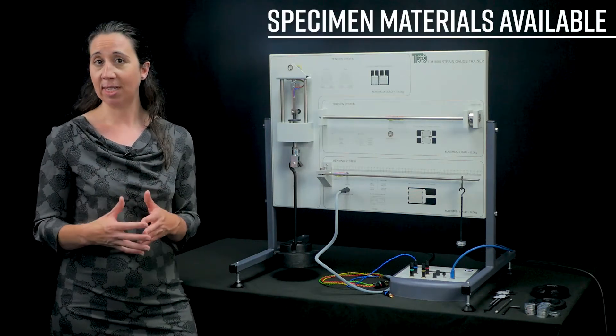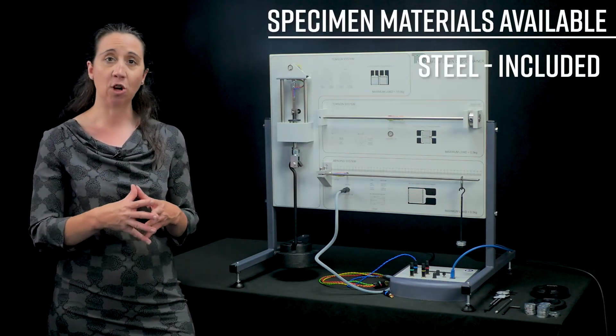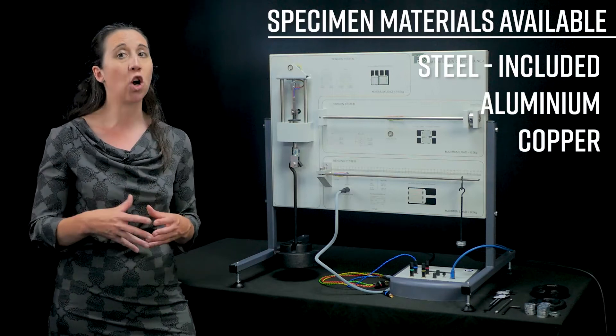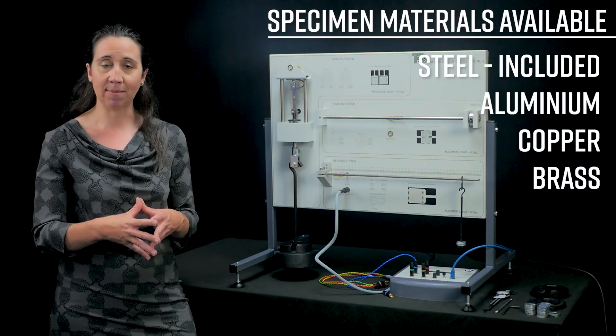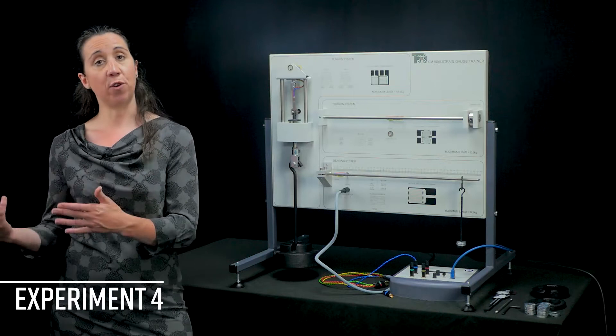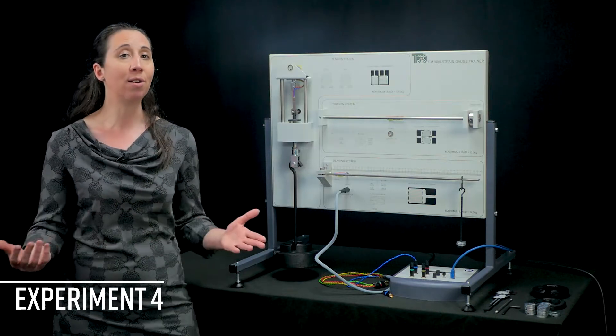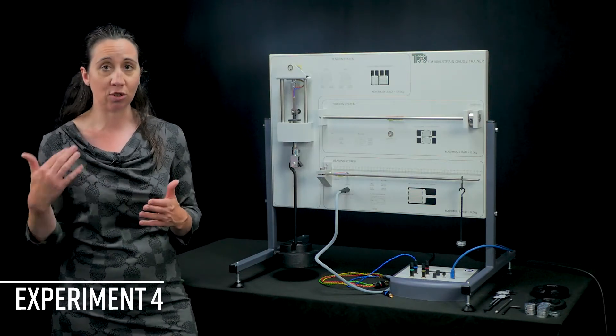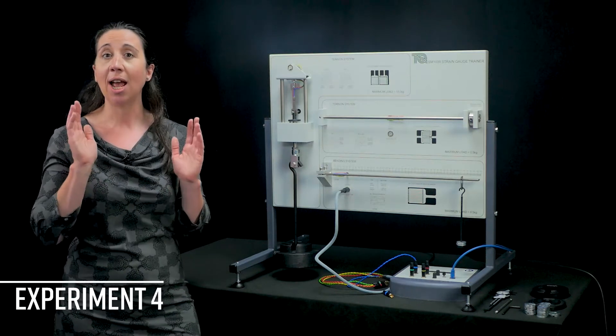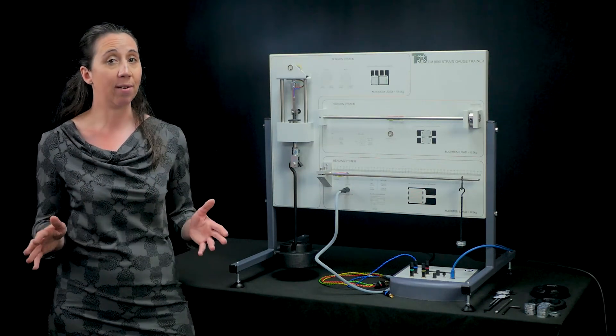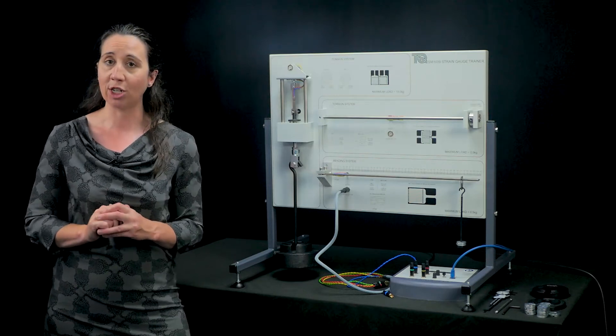If you want to investigate other materials, we do also supply as an optional extra aluminium, copper and brass specimens. Experiment 4 in the user guide shows students how to connect strain gauges to measure strains in two dimensions and compare the displayed tensile strains on theory and prove Poisson's ratio.